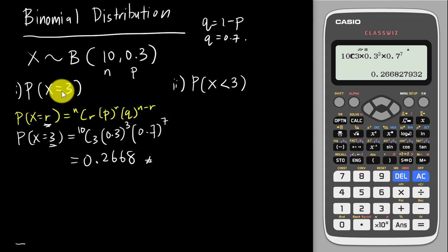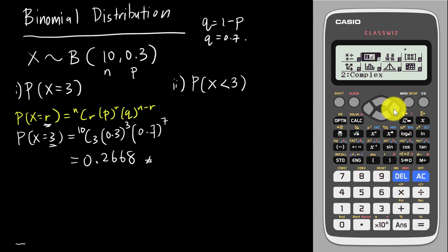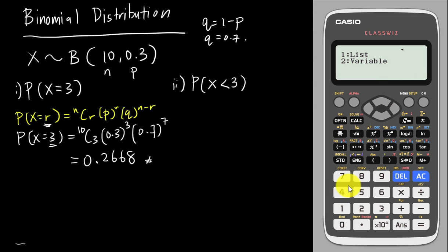To use the calculator for this, go into the menu and look for number 7, which is Distribution — you can also just tap 7. Then look for Binomial PD, which is number 4. Select variable mode, which is number 2.